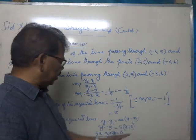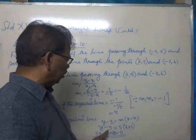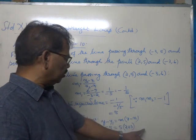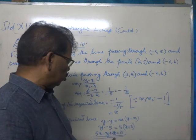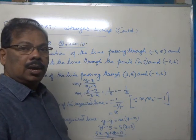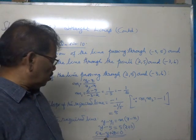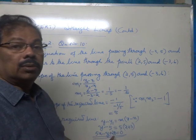When shifted to the right side, Y becomes negative. -5 shifted to the right side becomes positive. 5 into 3 is 15, 15 plus 5 is 20. The required equation of the line is 5X minus Y plus 20 equals 0.